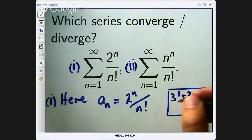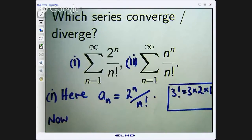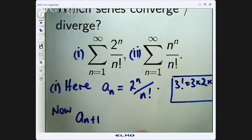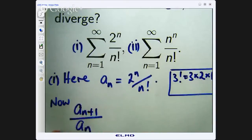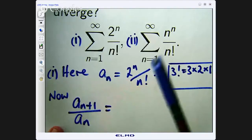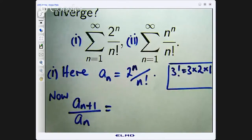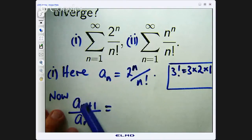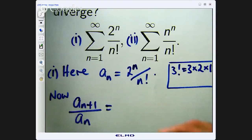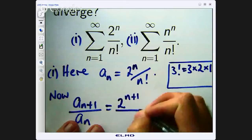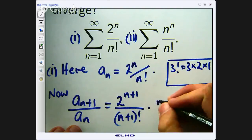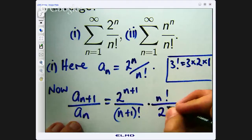So consider the following ratio: a sub n plus 1 over a sub n. And because this is like a fraction, if I divide one fraction by another fraction, I can just multiply by the reciprocal of this a sub n. So let's replace n with n plus 1 in brackets if we need to. So that's a sub n plus 1. And if I divide this by a sub n, what I can do is just multiply by the reciprocal.